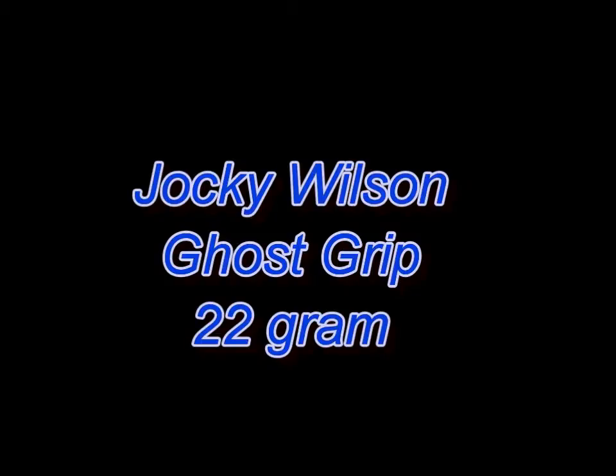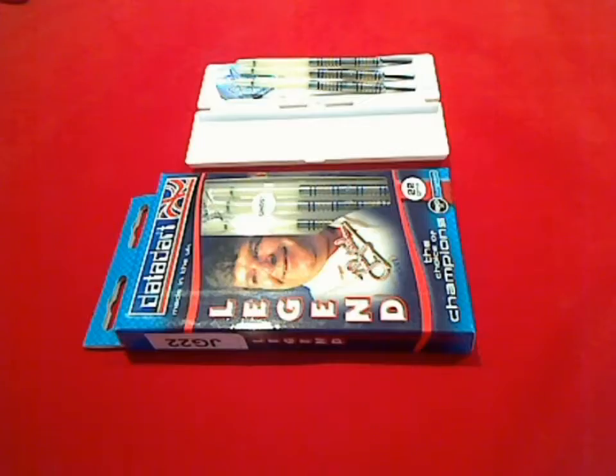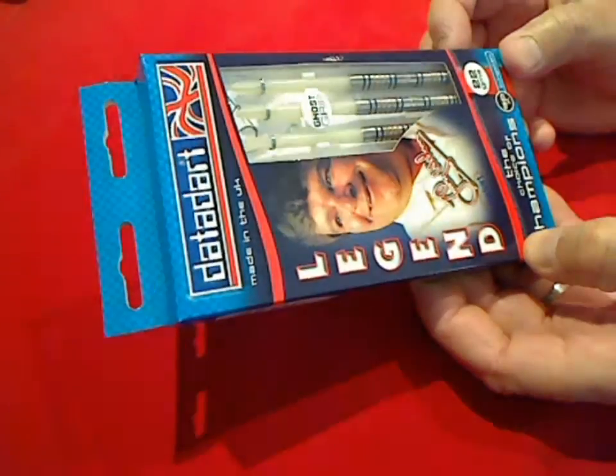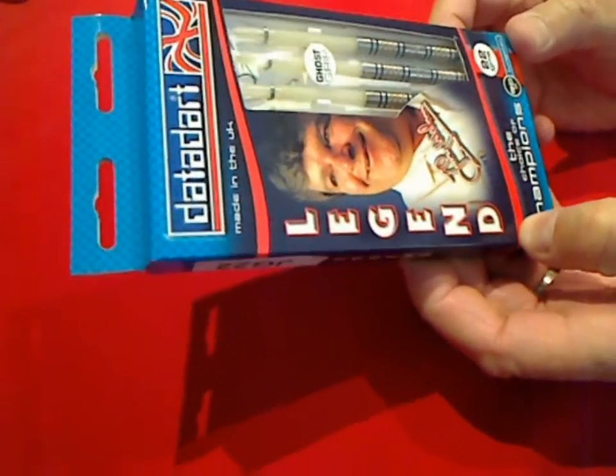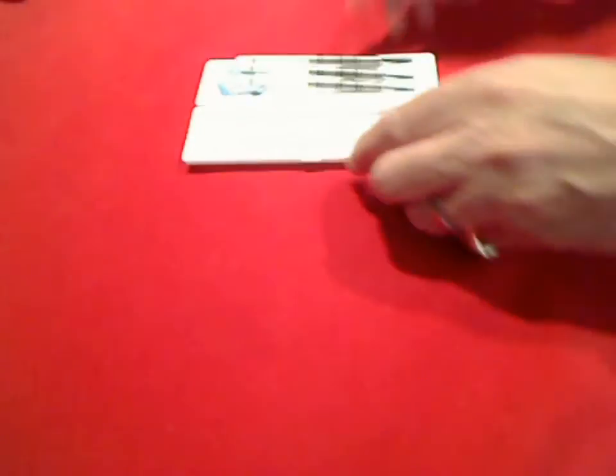The Jockey Wilson 22 gram Ghost Grip from Data Dart. These darts are made in the United Kingdom from 90% tungsten. Inside the packaging you will receive a plastic carry case with the three darts and Jockey Wilson signature flights.